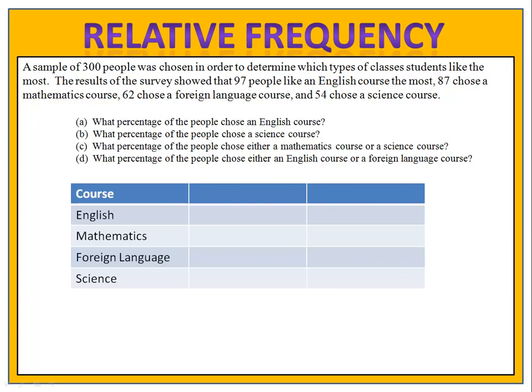First, let's fill in this table. We have the course — English, mathematics, foreign language, or science — and then we have the frequency, the number of people who chose that. The relative frequency for each is very simple. How many people liked English? 97 out of 300. 97 divided by 300 is 0.3233, meaning 32.3% of the people chose an English class.